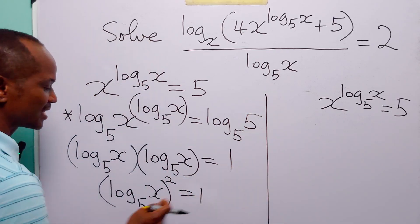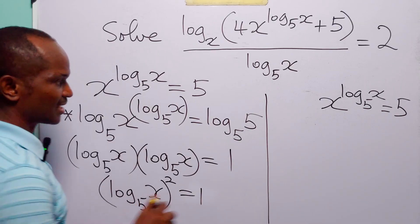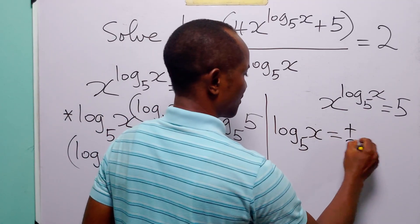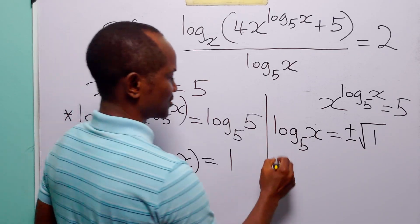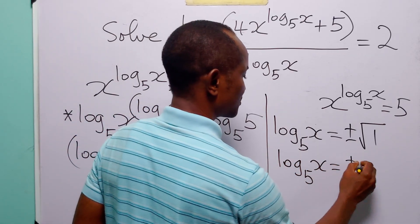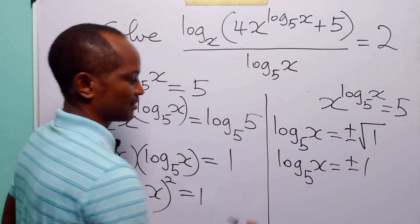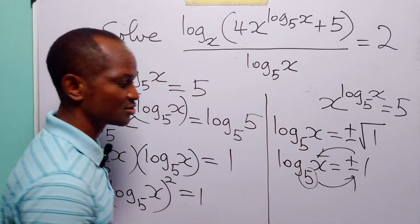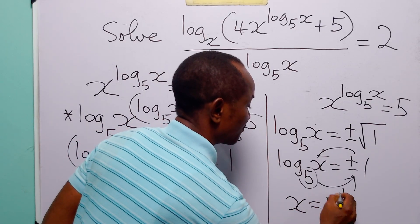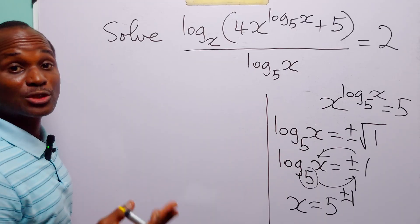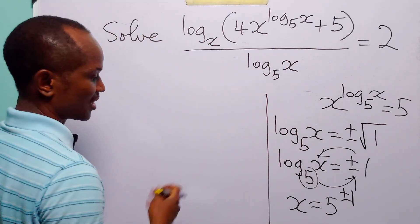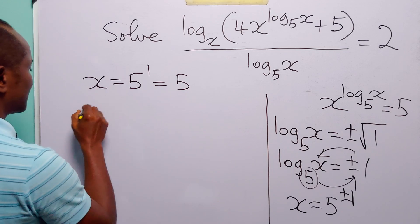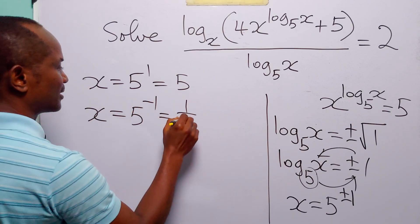To solve this equation, we take the square root of both sides, giving log base 5 of x equals plus or minus 1. This means 5 to the power plus or minus 1 equals x. So we have that the two values of x that satisfy this logarithmic equation are x equals 5 to the power 1, which is 5, and x equals 5 to the power minus 1, which is 1 over 5.